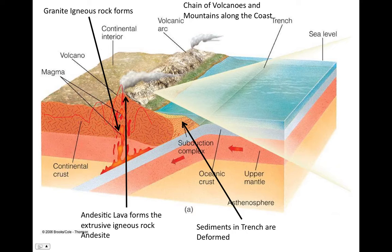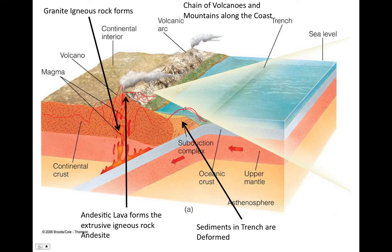We have granite igneous rocks that form in the interiors of these mountains, and the volcanism along these convergent plate boundaries forms the extrusive igneous rock andesite. So lava flows form andesite. We expect to find basalt from the volcanism at divergent plate boundaries, and we expect to find andesite from the volcanism along convergent plate boundaries — subduction zone volcanism. Also, sediments accumulate in the trench that are scraped off of the subducting lithosphere. Sometimes this pile of sediments — called an accretionary wedge or accretionary prism — can actually reach above sea level and form some topography.